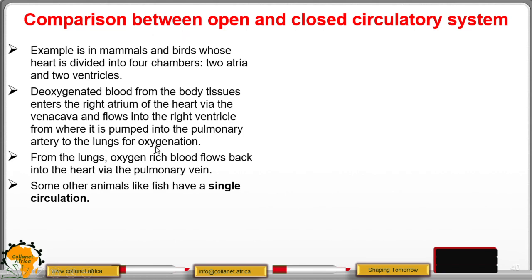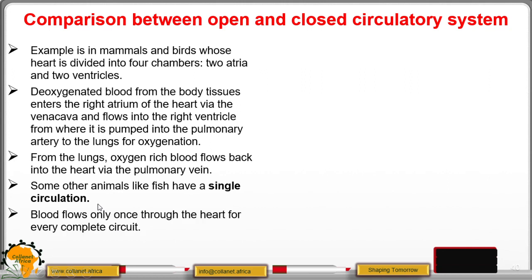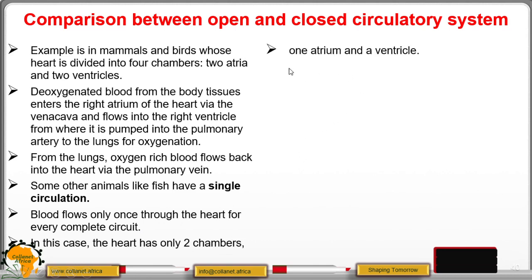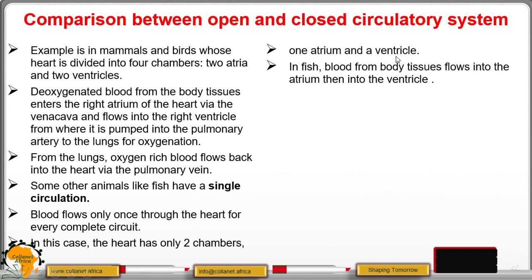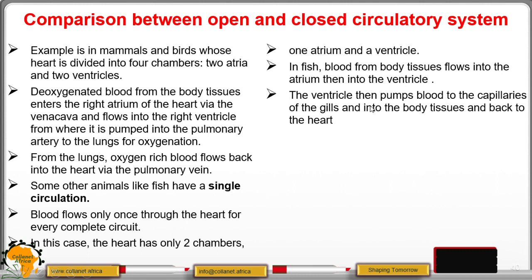Blood flows through the heart twice in every complete circulation. Some animals like fish have single circulation, where blood flows only once through the heart per complete circuit. In this case the heart contains two chambers — one auricle and one ventricle. In fish, blood from the body tissues flows into the auricle, then into the ventricle, which pumps blood to the capillaries of the gills and then into the body tissues and back to the heart.